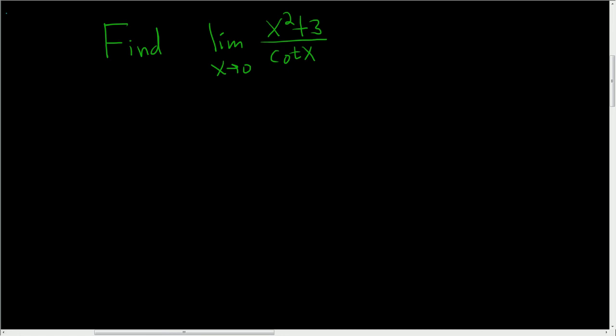We have to find the limit as x approaches 0 of x squared plus 3 all divided by the cotangent of x. Solution: if you just plug in 0, you get cotangent of 0.